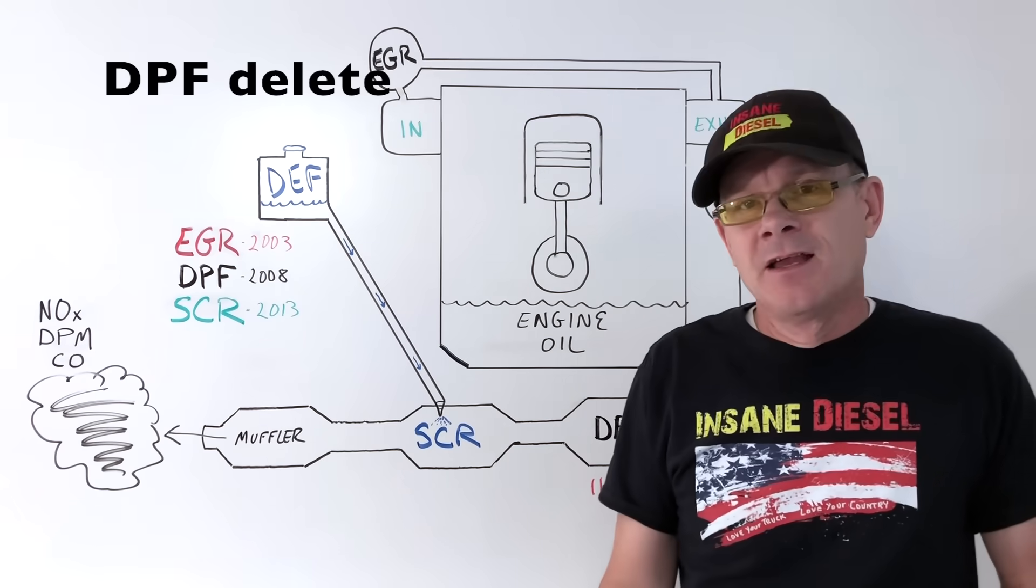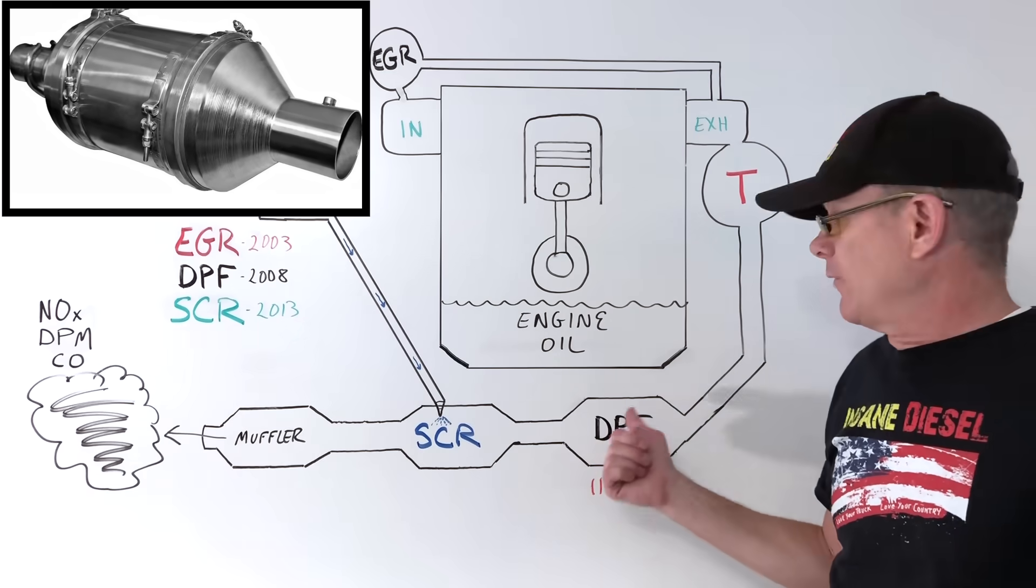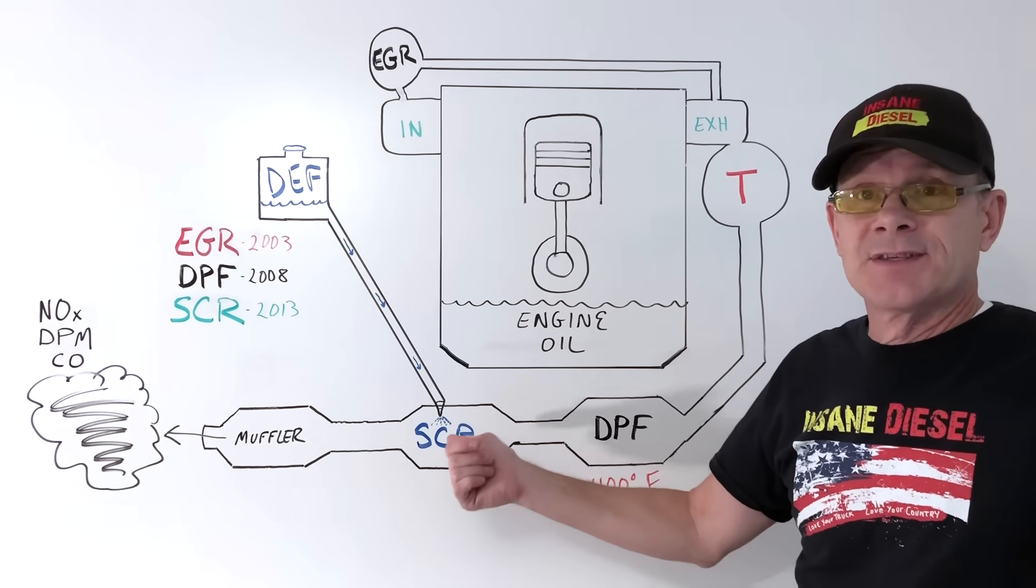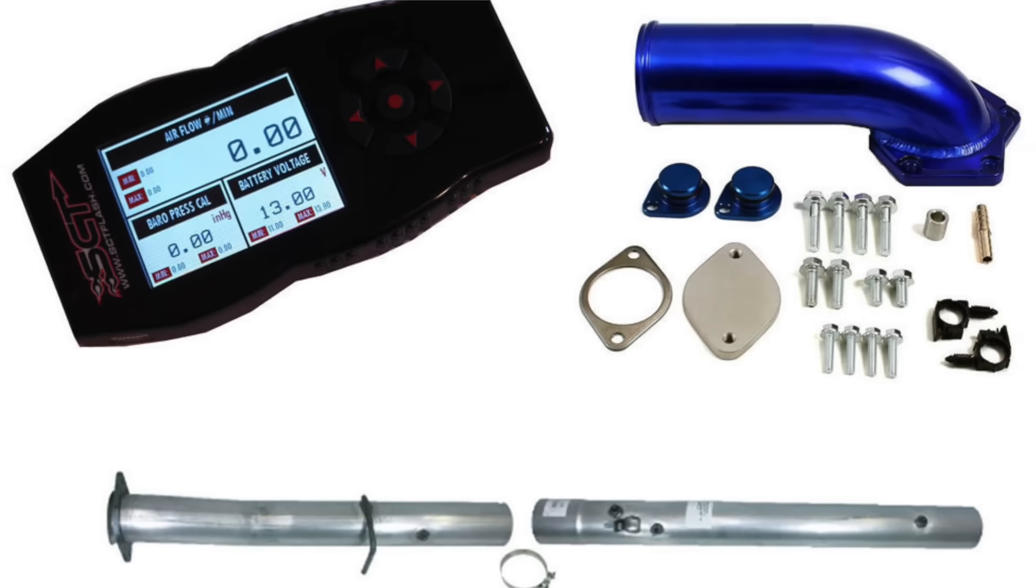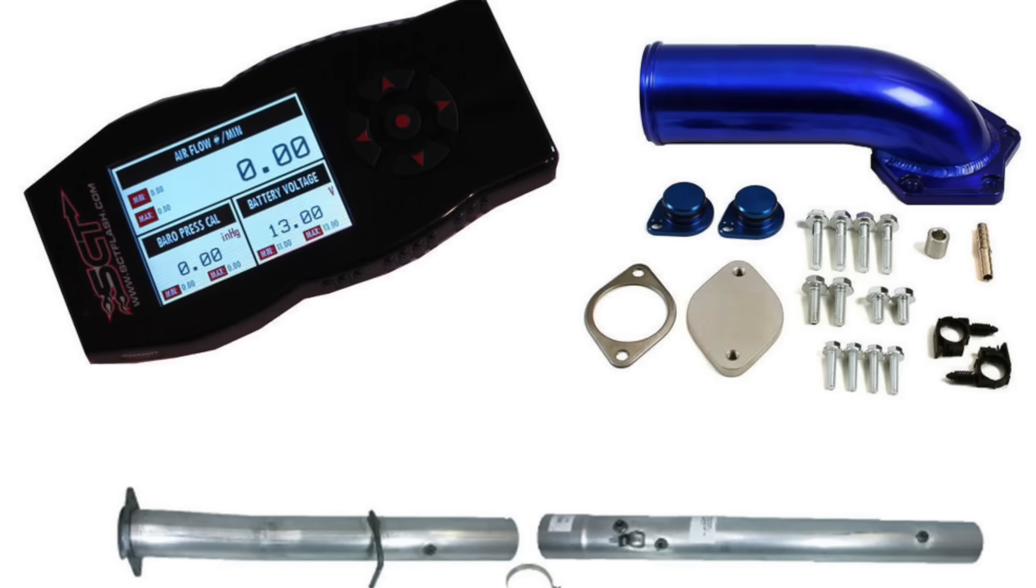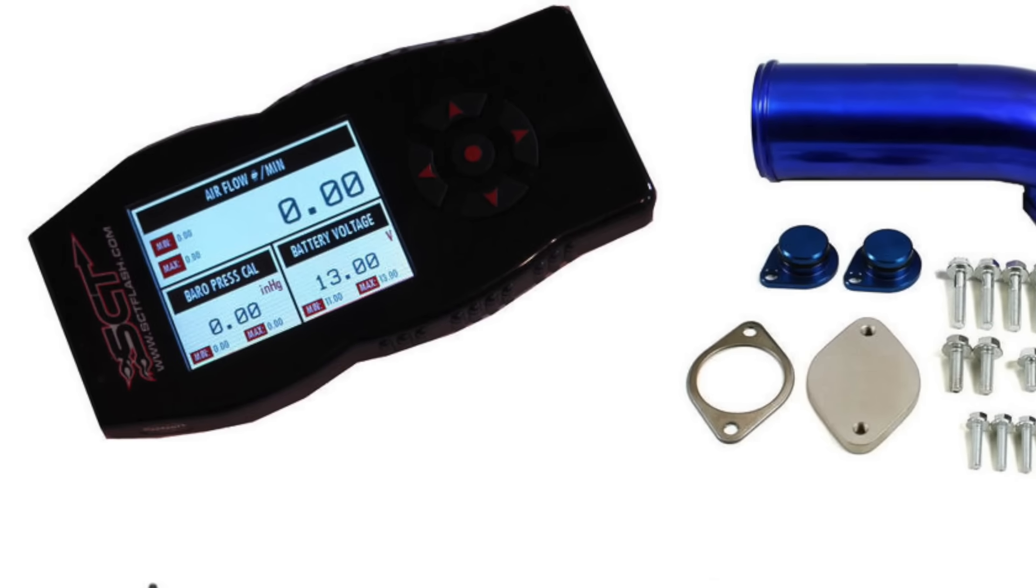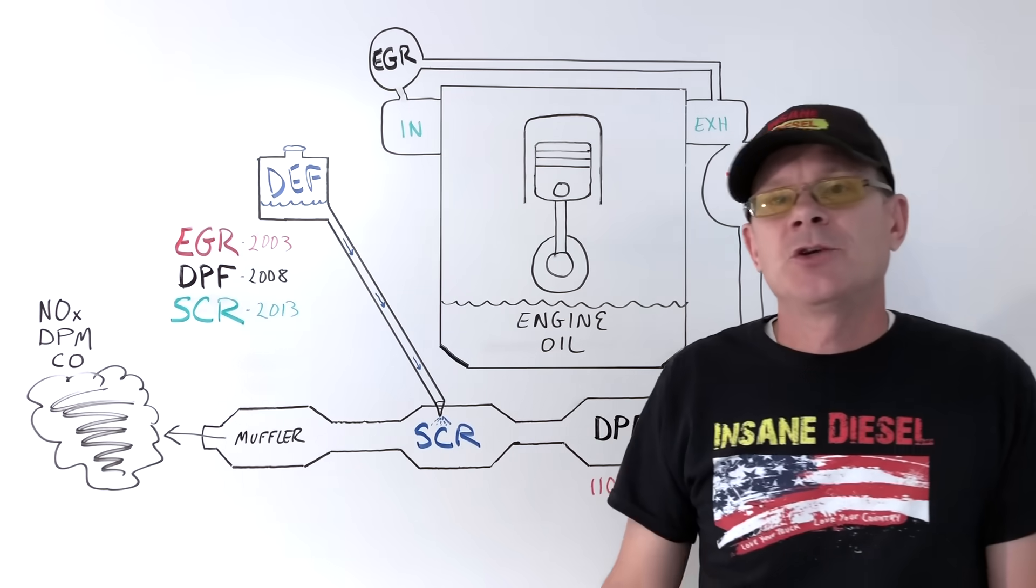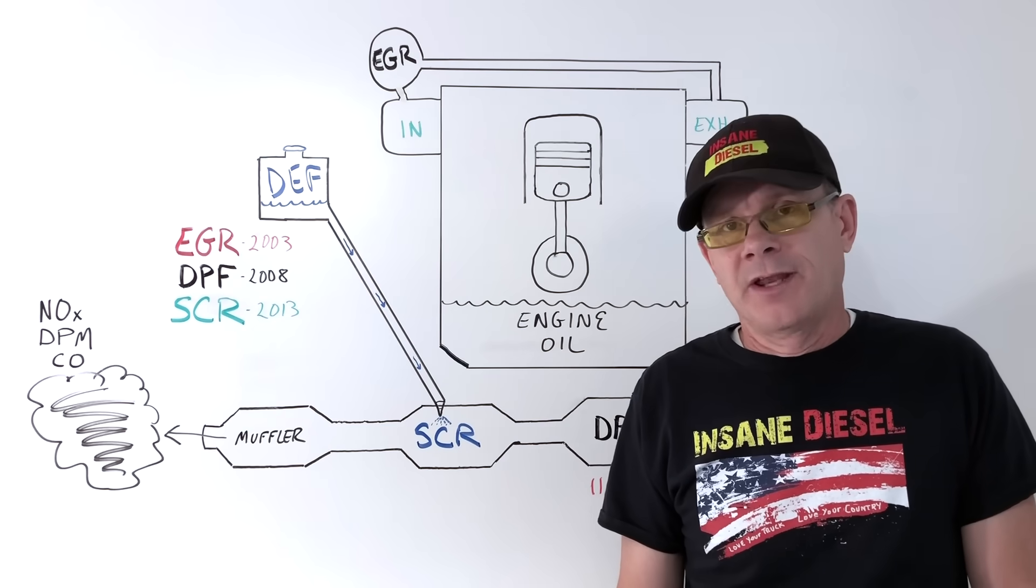Deleting the DPF means removing the device, capping the electrical connectors of the SCR, for example, because you usually do them both at the same time, and installing a straight pipe in its place. The engine computer must then be reprogrammed to exclude the system and improve engine performance. Deleting the DPF and SCR will result in a huge increase in gas mileage and a better running engine.